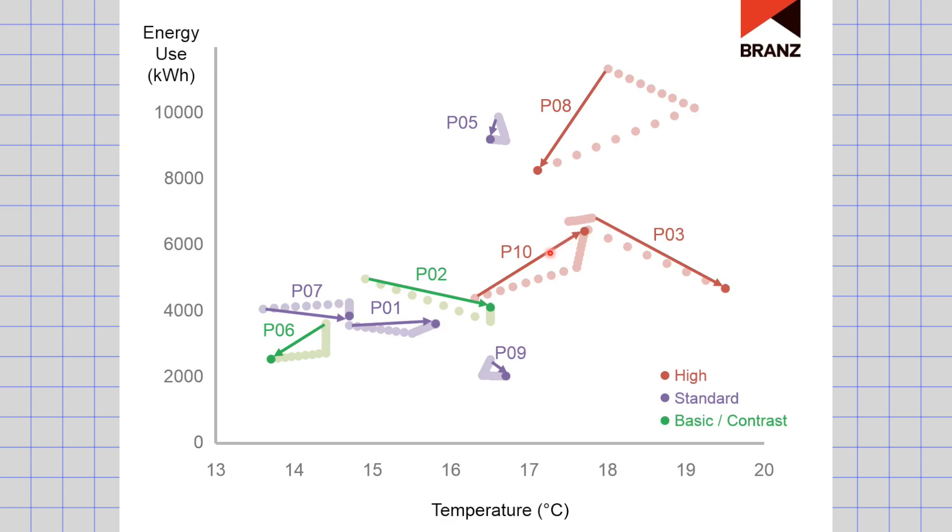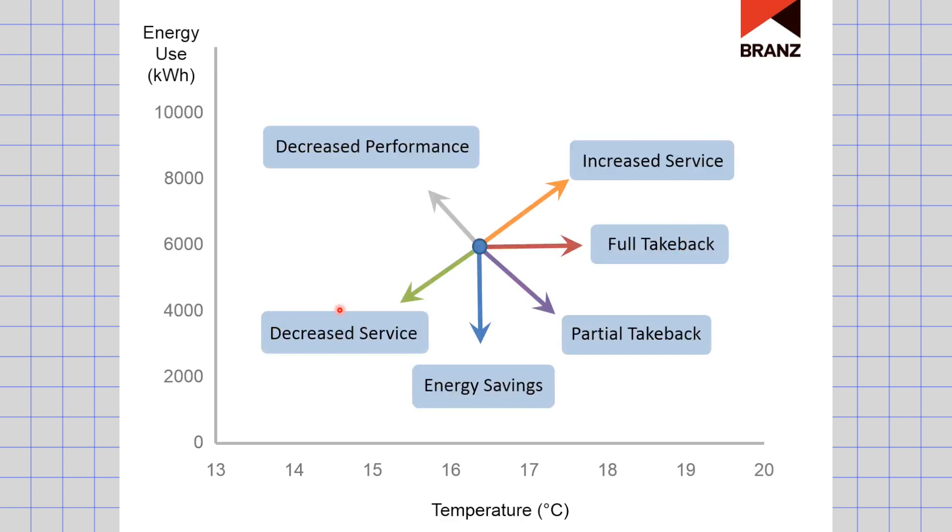For the other houses, the smaller interventions, we can generally see an increase of temperatures within that, and the movement and change of energy usage is quite small. So in summary, we can see that big changes in the change to the house result in a big change of temperatures or energy usage within that house. The smaller interventions resulted in smaller change, but more often than not, that was realized as improved temperatures than reduction in energy services.